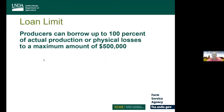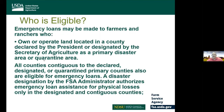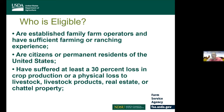Producers can borrow up to 100% of their actual production loss, with a maximum loan of $500,000. To be eligible, producers must own or operate land in a county declared a disaster area or a contiguous county. Right now, very few counties in North Dakota don't qualify for emergency loans. Other eligibility requirements include being an established farm operator, being a U.S. citizen, and having suffered a 30% production loss or physical loss to livestock, livestock products, real estate, or chattel property.